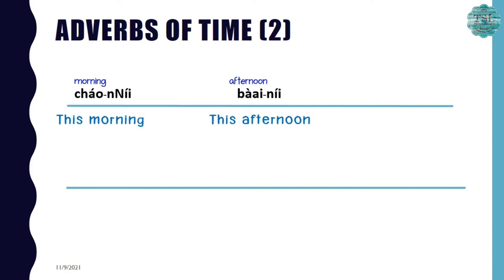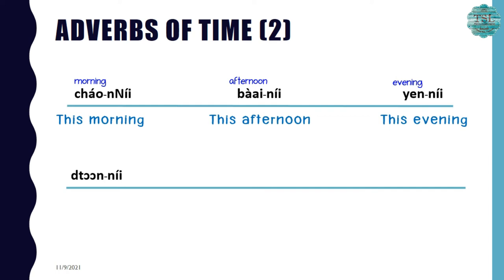If you would like to say 'tomorrow afternoon,' you can say บ่ายพรุ่งนี้. The next one is เย็นนี้. As mentioned before, เย็น has several meanings, but in this case it means 'evening,' so เย็นนี้ means 'this evening.' The next one is ตอนนี้. ตอน means 'when' for a statement sentence, so ตอนนี้ means 'now' or 'this moment.'